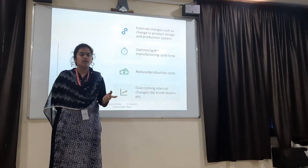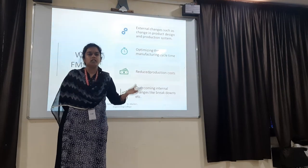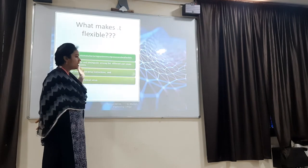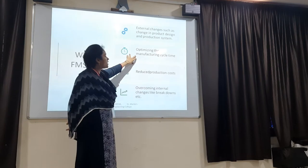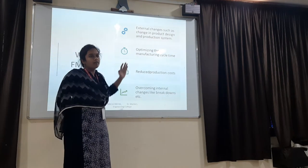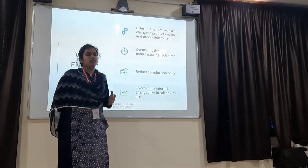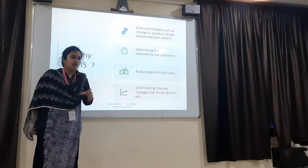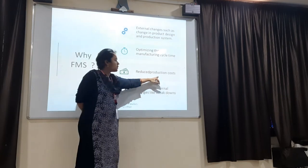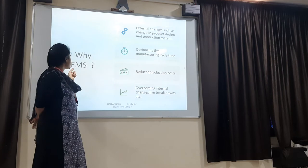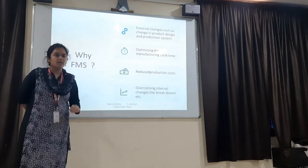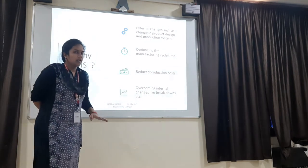If you want to do any sheet metal processing for the raw material, that metal processing sheet is given to the machining operation. That is the advantage of using FMS — everything at one point. Optimizing the manufacturing cycle time: you can reduce the cycle time because all operations are at one point, reducing manufacturing time and transport time between shop floors. Next, reduction in production cost — production cost can also be reduced by FMS. Overcoming internal changes like breakdowns: breakdown chances are very less in FMS, and if it happens, you can sort it out at that point only.